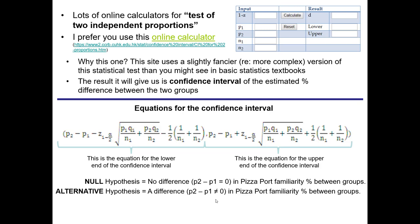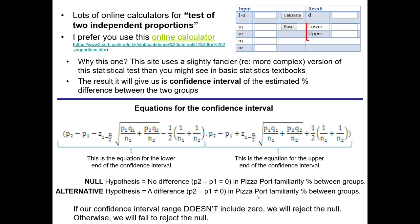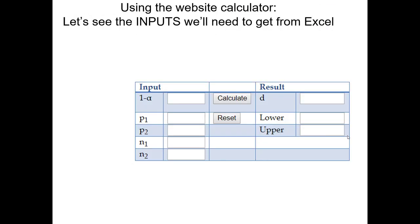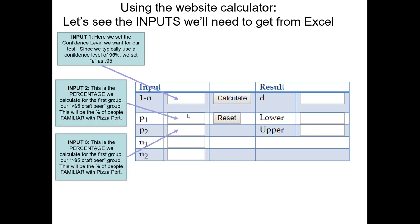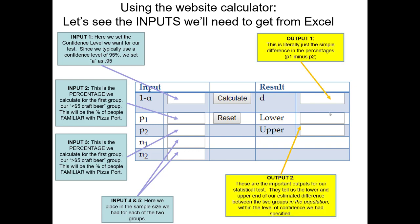There is some meaningful difference in the proportion of people familiar with Pizza Port. If our confidence interval range does not include zero, we will reject the null hypothesis and claim the alternative is likely true. To use the calculator, first set the confidence level — we'll plug in 0.95 for a 95% confidence level. P1 and P2 are the proportions of people in each group familiar with Pizza Port, which we'll calculate in Excel. We also need the sample size for each group, as sample size impacts our margin of error.